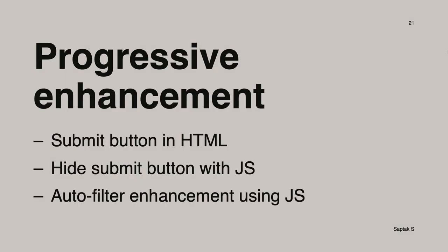How do you progressively enhance this? First, create the entire filter with a submit button — even if it looks plain, have a submit button so that anyone with JavaScript disabled can still click a checkbox, click submit, and get an updated list. Then when writing JavaScript, hide the submit button using JavaScript and add your JavaScript features. Anyone with JavaScript enabled gets the same enhanced experience, but anyone without JavaScript can still use the full functionality.